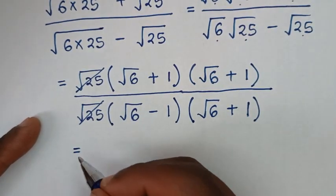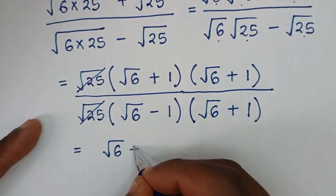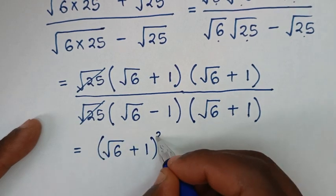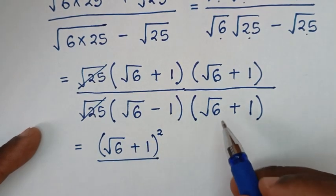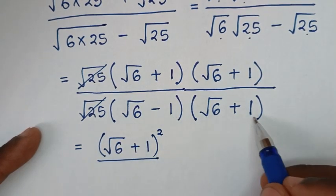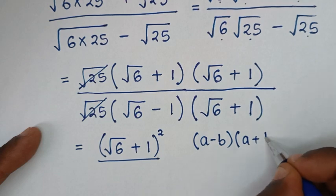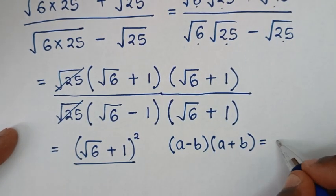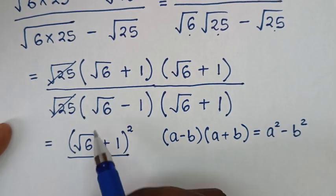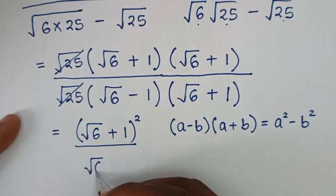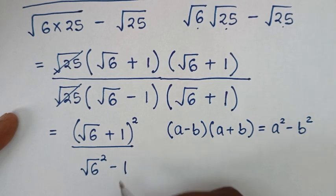Then it will be equal to: square root of 6 plus 1, times square root of 6 plus 1, is square root of 6 plus 1, bracket, squared. Then over, in the denominator, square root of 6 minus 1, times square root of 6 plus 1 — this times this is in the form of (a minus b)(a plus b), which equals a squared minus b squared. So a squared is square root of 6 squared, then minus b squared is 1 squared, which is 1.